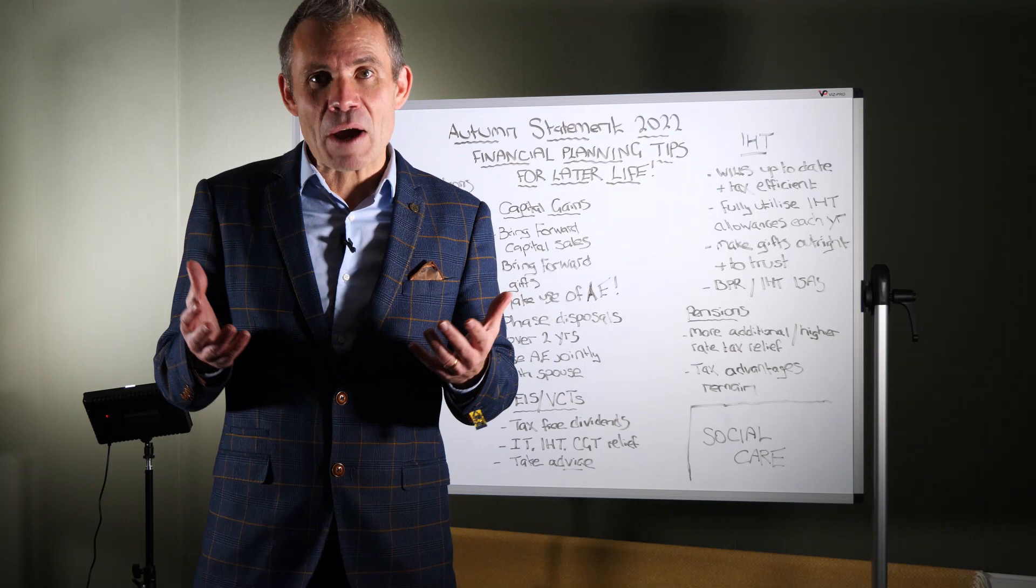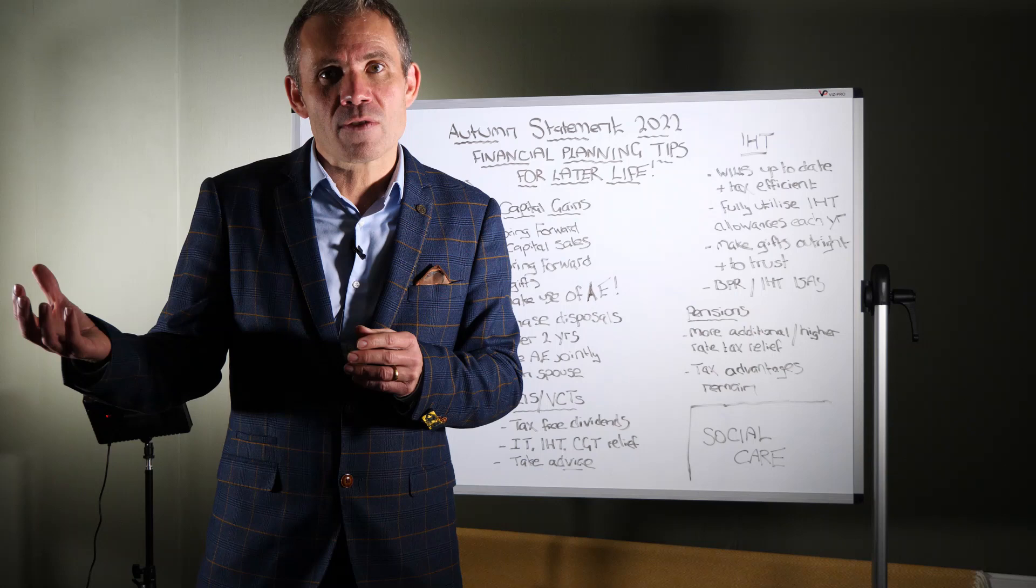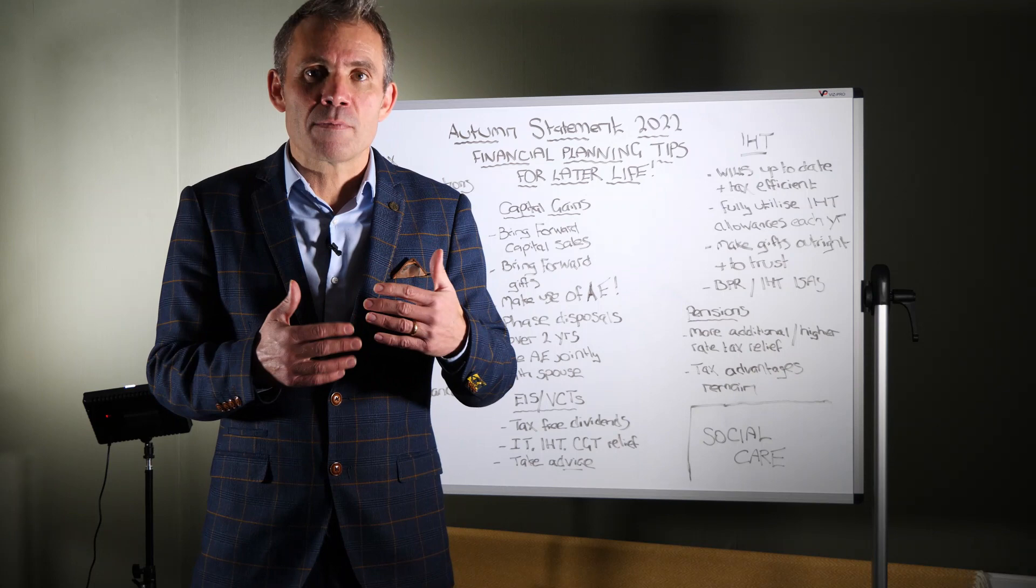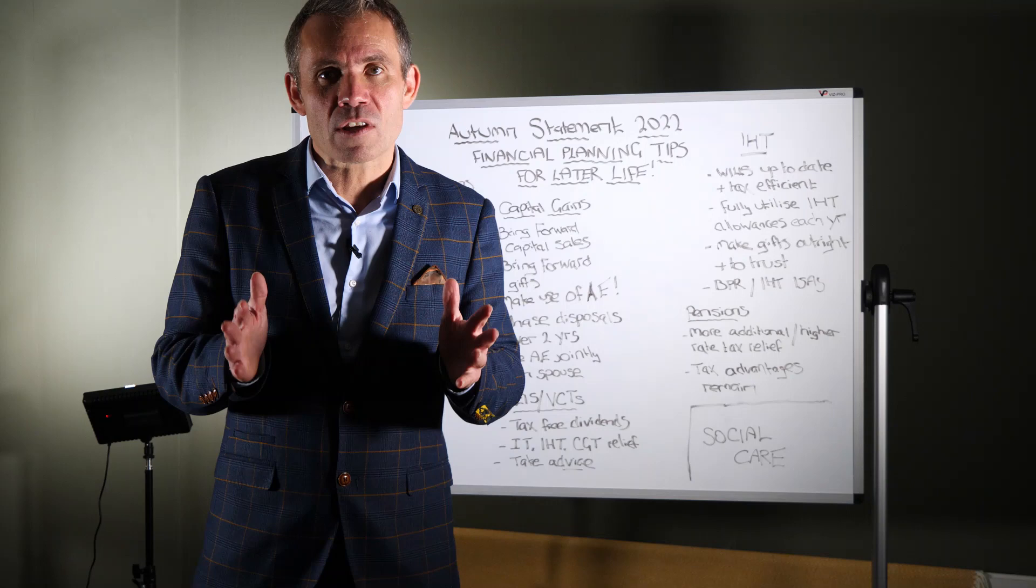Allowances, tax allowances have been reduced heavily. So income tax, the threshold by which you have to pay additional tax has decreased from £150,000 of earnings down to £125,000. So you only have to be earning over £125,140 now to pay the very punitive 45% tax rate. And everything else, all the other thresholds have been fixed, as I said, all the way up to 2028.